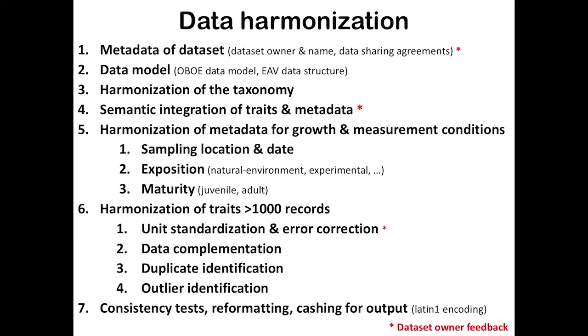What we do in the context of TRY is basically mostly data harmonization work. First we give each dataset some metadata, then we put all the data into one consistent data model, then we harmonize the taxonomy, correct misspellings, and do some semantic integration of traits and metadata. This is not always trivial because plant height for one person is the height of the plant, and for another person canopy height is the plant height — but canopy height could also be the height of the canopy of the ecosystem where the plant has been grown, which would not be a plant trait.